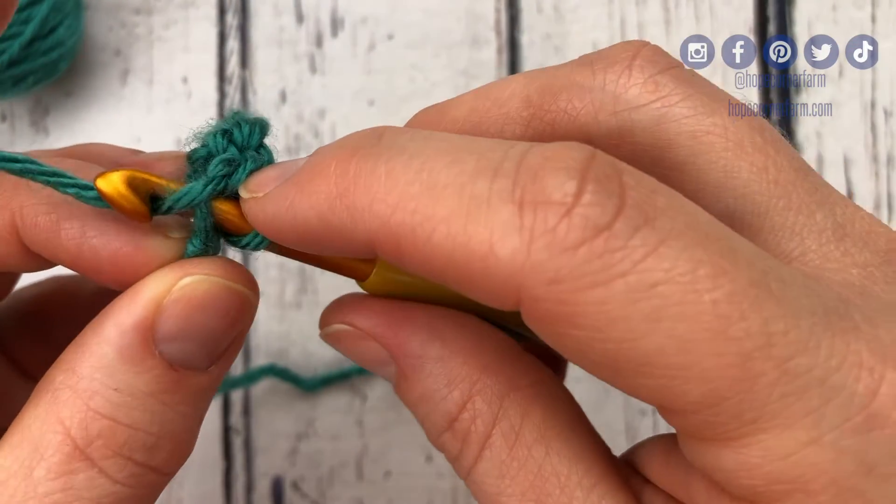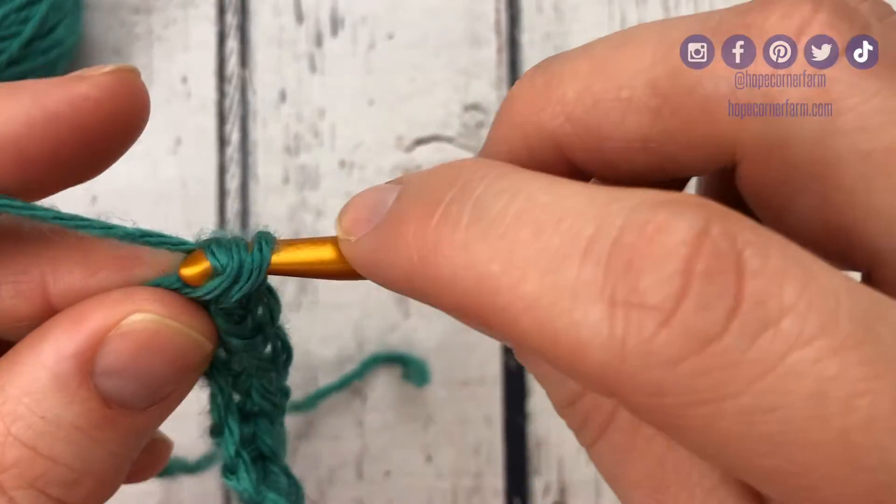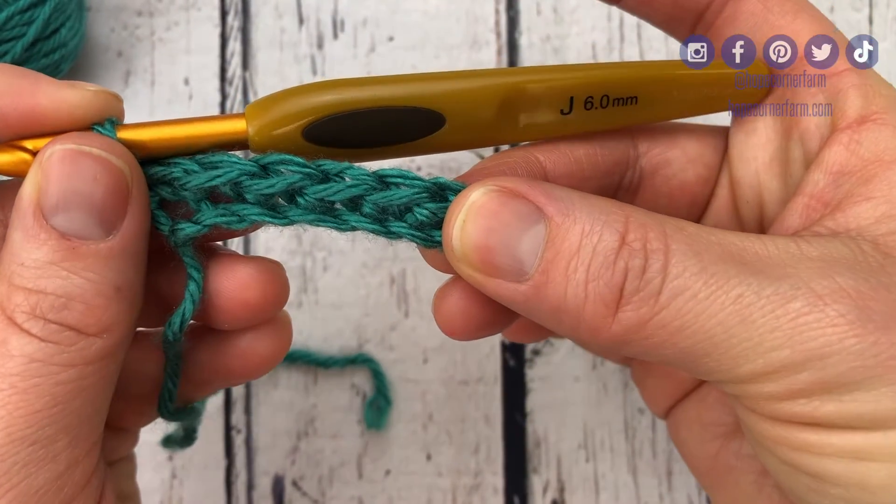We're gonna finish out this row here. We're gonna go right here, go through, and there. So there is single crocheting into a chain.